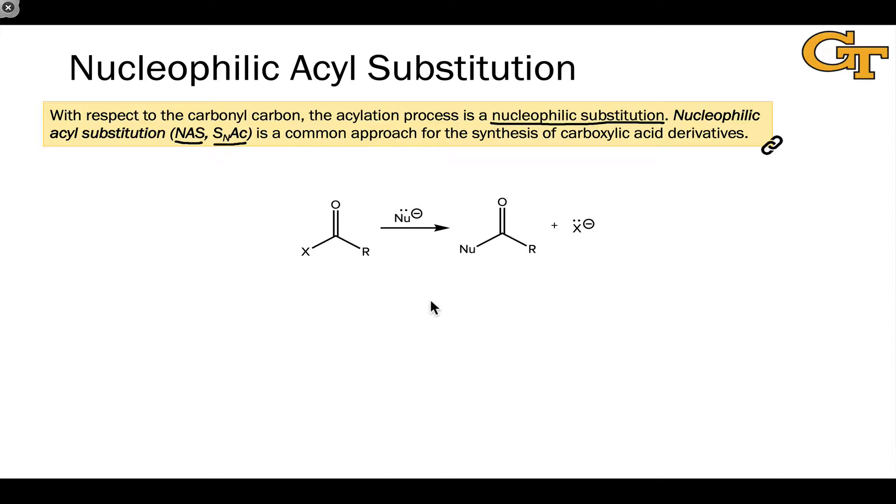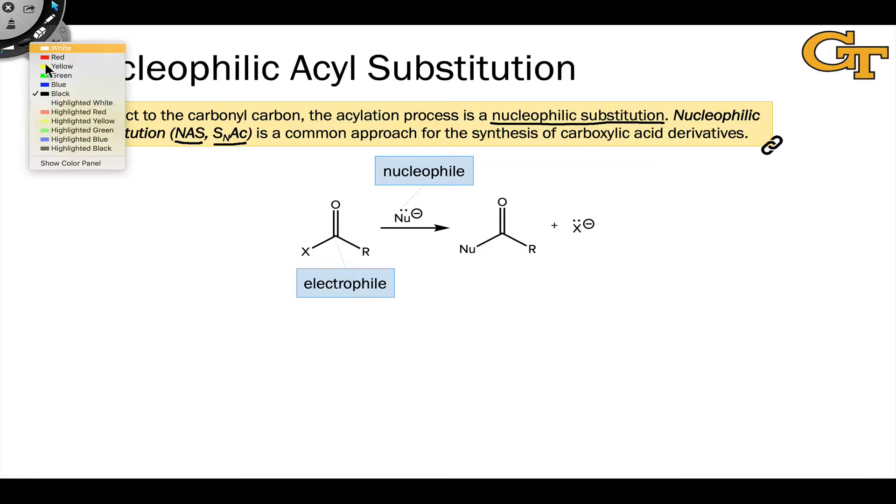The key elements of a nucleophilic acyl substitution reaction are a nucleophile, which may be anionic or neutral. Generally, neutral nucleophiles need at least an acid catalyst to make this work. The carbonyl carbon is the electrophile here. It's what accepts electrons from the nucleophile.